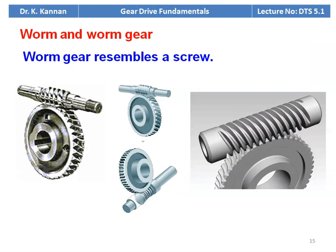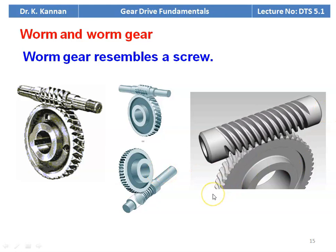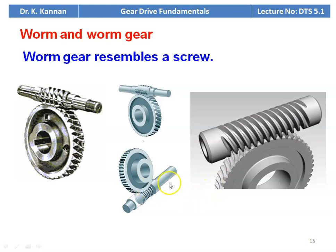The worm gear drive is used for non-intersecting shafts. The circular element is called the gear, and the top element is called the worm. The worm gear drive has very low efficiency, but the speed ratio is very high. We can transmit power between non-intersecting shafts with a high speed ratio, but the efficiency of the drive is very low compared to all other drives.